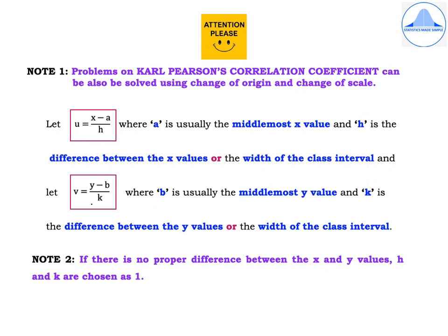Now if there is no proper difference between the x and y values, h and k are chosen as 1.